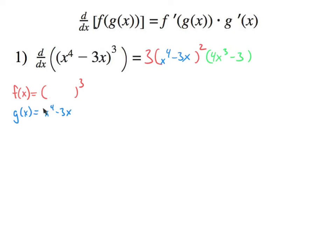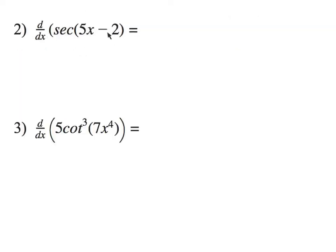This is the derivative using the chain rule — the outside is this piece, the inside is this piece. For the next problem, if we want to take the derivative of secant of 5x minus 2, we should notice a chain rule. The outside is secant something, and the inside is 5x minus 2. The derivative of the outside is secant blank tangent blank. We leave the inside, which is 5x minus 2, then take the derivative of the inside — which is just 5. You could write the 5 up front, but that is the answer.